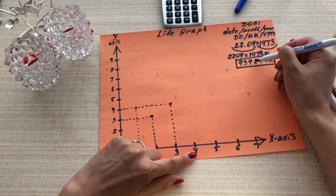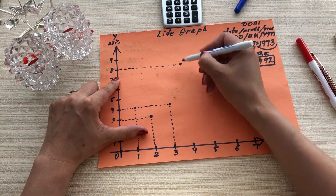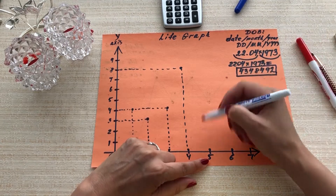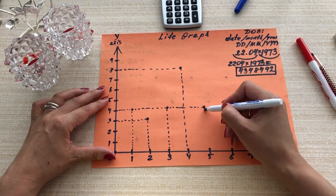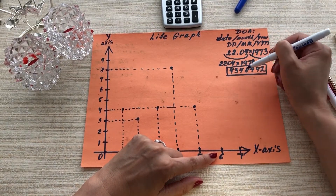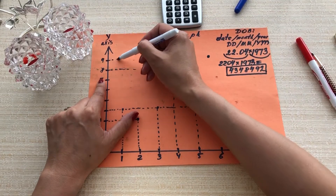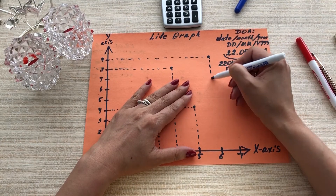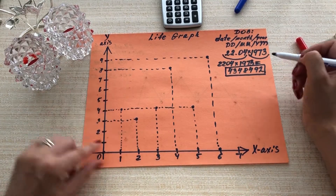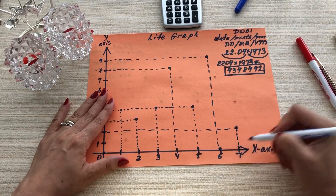The 4th digit is 8. And then the 5th digit. Moving to the 6th: 1, 2, 3, 4, 5, 6 — the 6th is 9. Look at that — she's got the maximum! And the last one, the 7th digit is number 2.